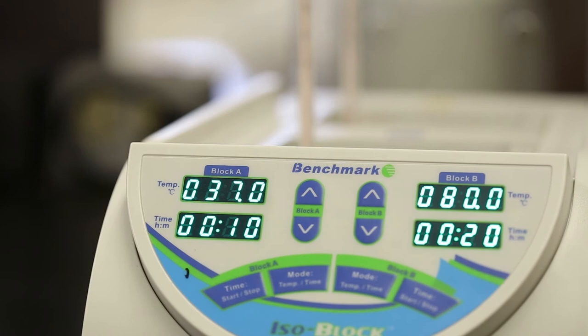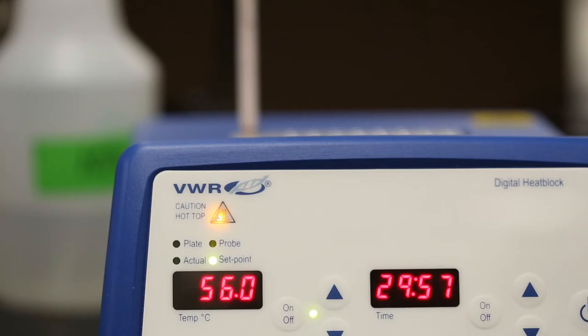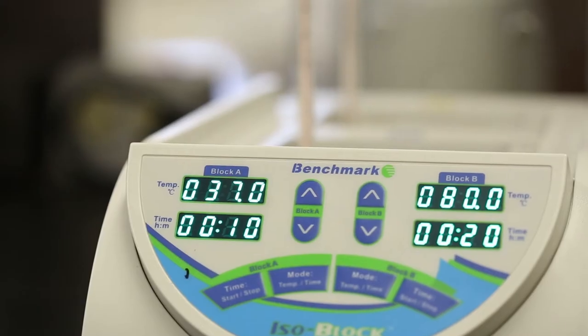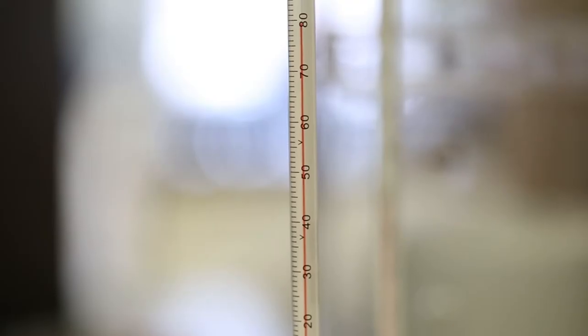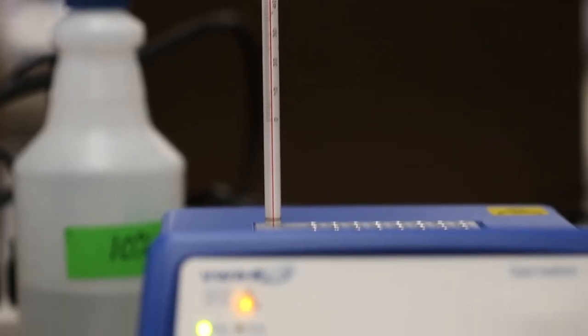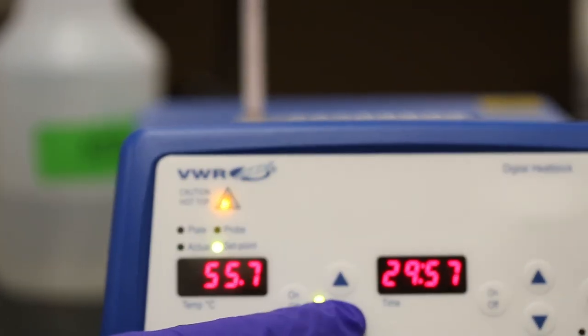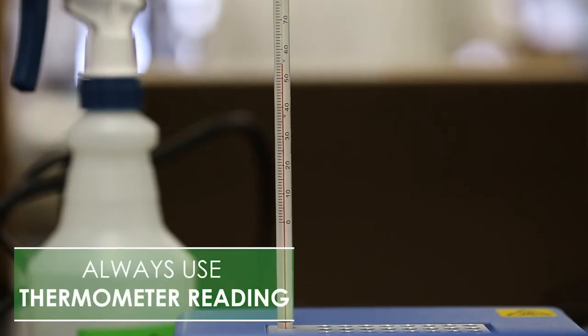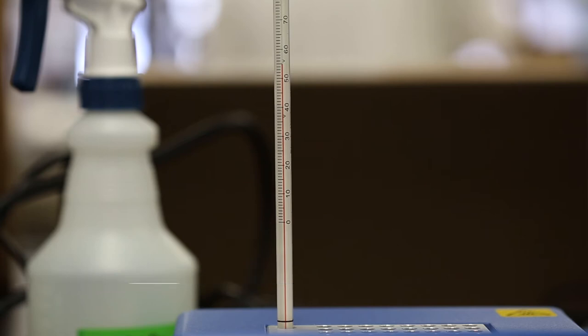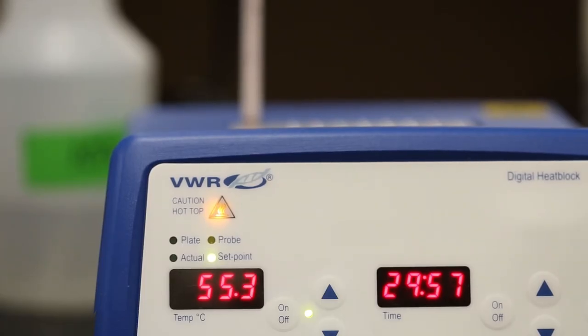Check the three heaters. They should read 37 degrees, 80 degrees, and 56 degrees Celsius respectively. If they do not, they may still be heating. If they appear to be done heating, indicated by a beep from the unit, check the thermometer in each block. If they do not read the appropriate corresponding temperature, adjust the heating block to within two degrees. Always go by the thermometer reading. Once the thermometer reaches the correct temperature, the heater will hold there even if the digital display varies from the thermometer setting.